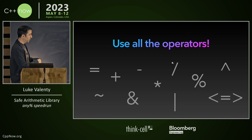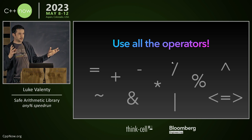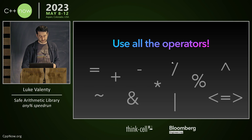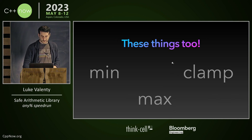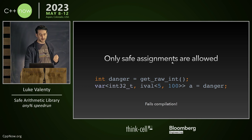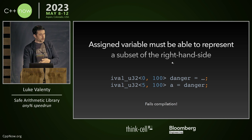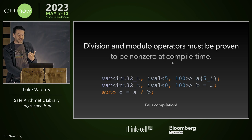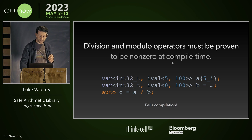On top of that, when we perform an operation, we can calculate what the new set of possible values can be, and we can do this very efficiently — much faster than formal proofs. At compile time, we make sure only safe assignments are allowed: you can't take a raw int and assign it to a safe value. Even with a safe value, it must be a subset of what you're assigning it to. Values that can't be zero must be initialized using a UDL. Division and modulo operators must be proven — the denominator must be proven non-zero at compile time, or it fails compilation.